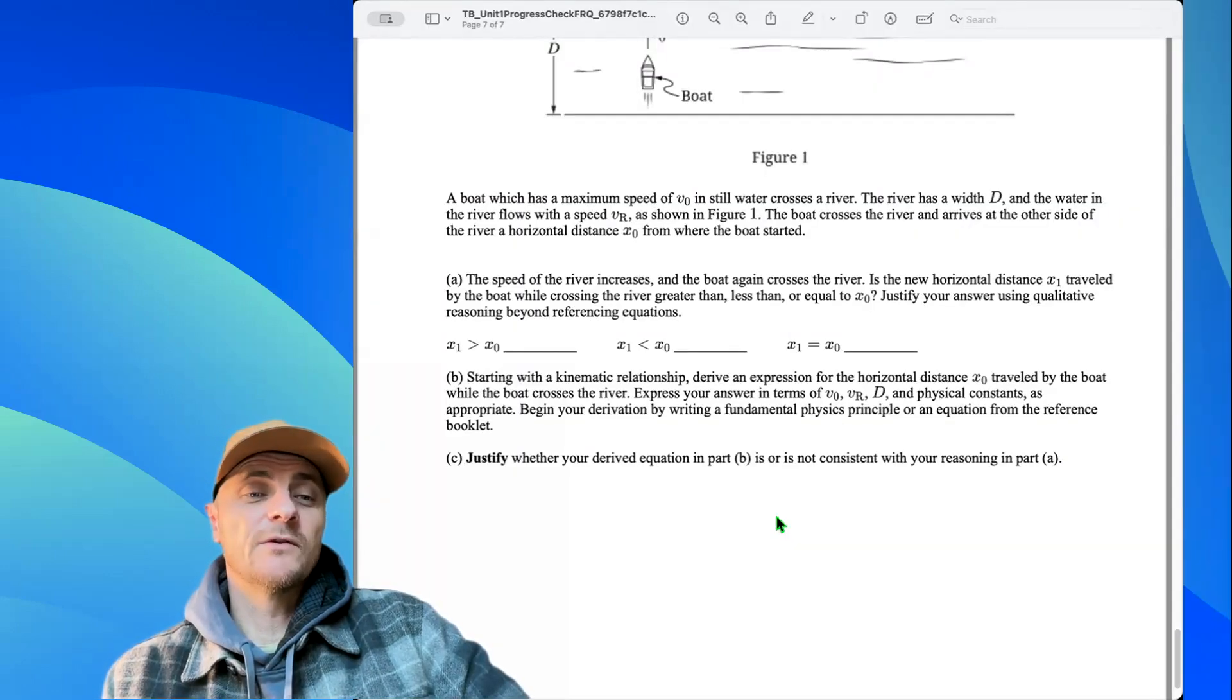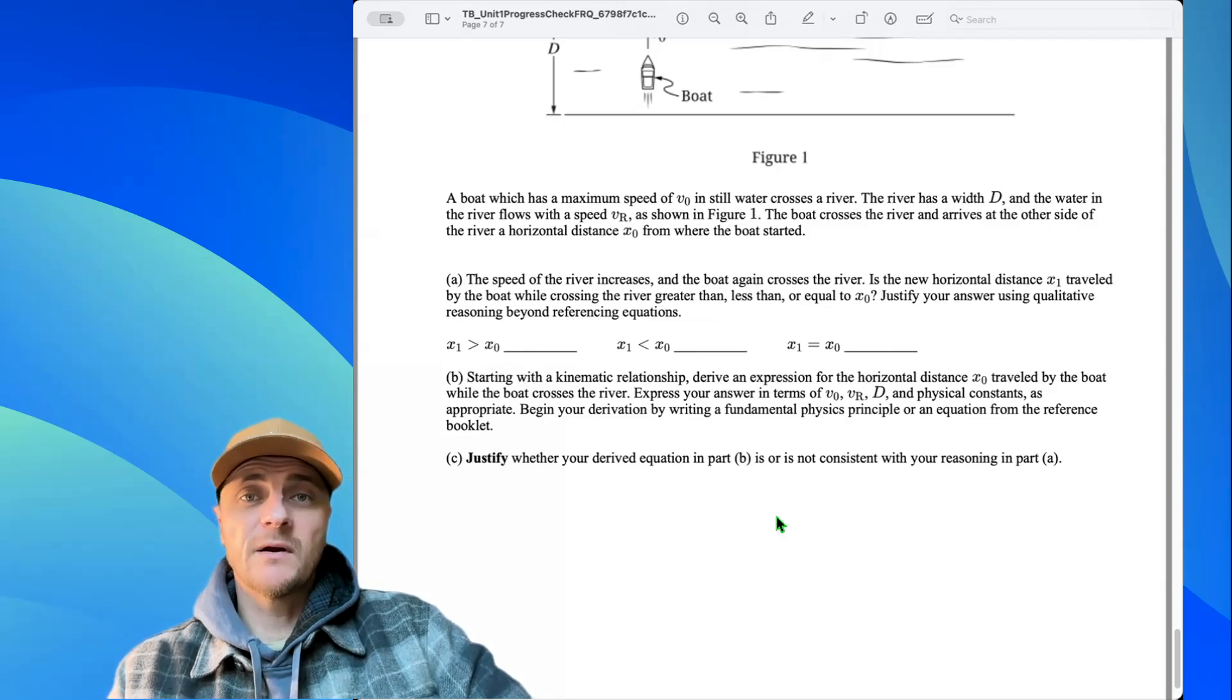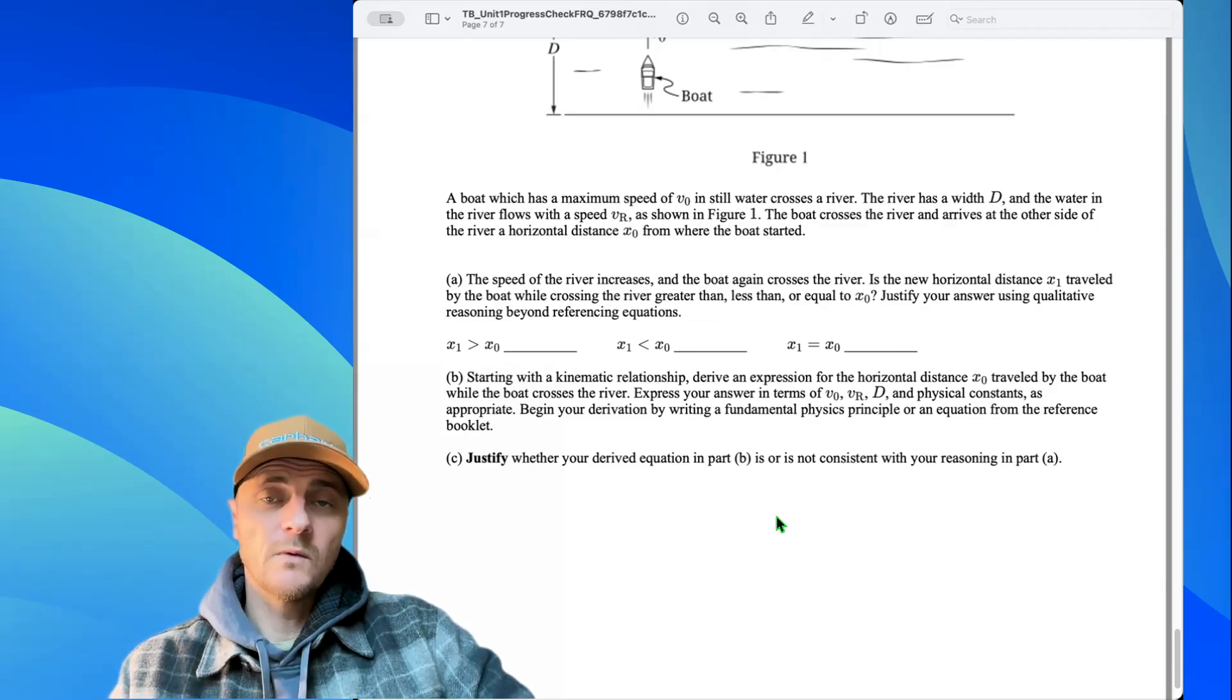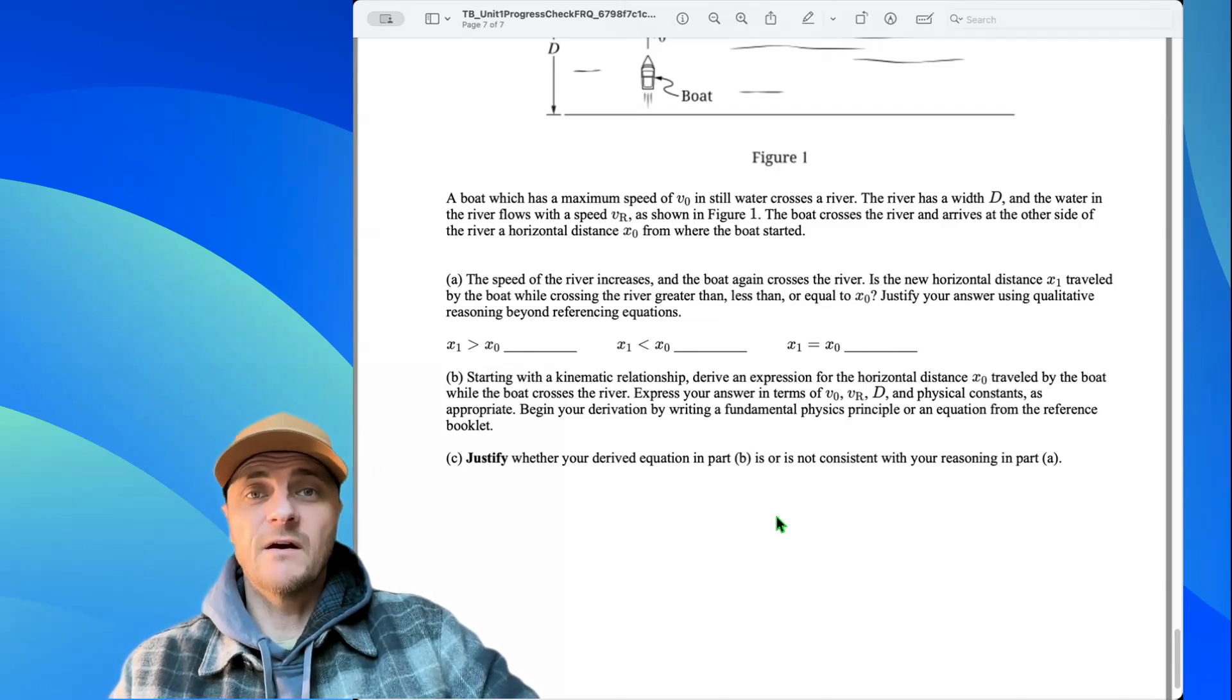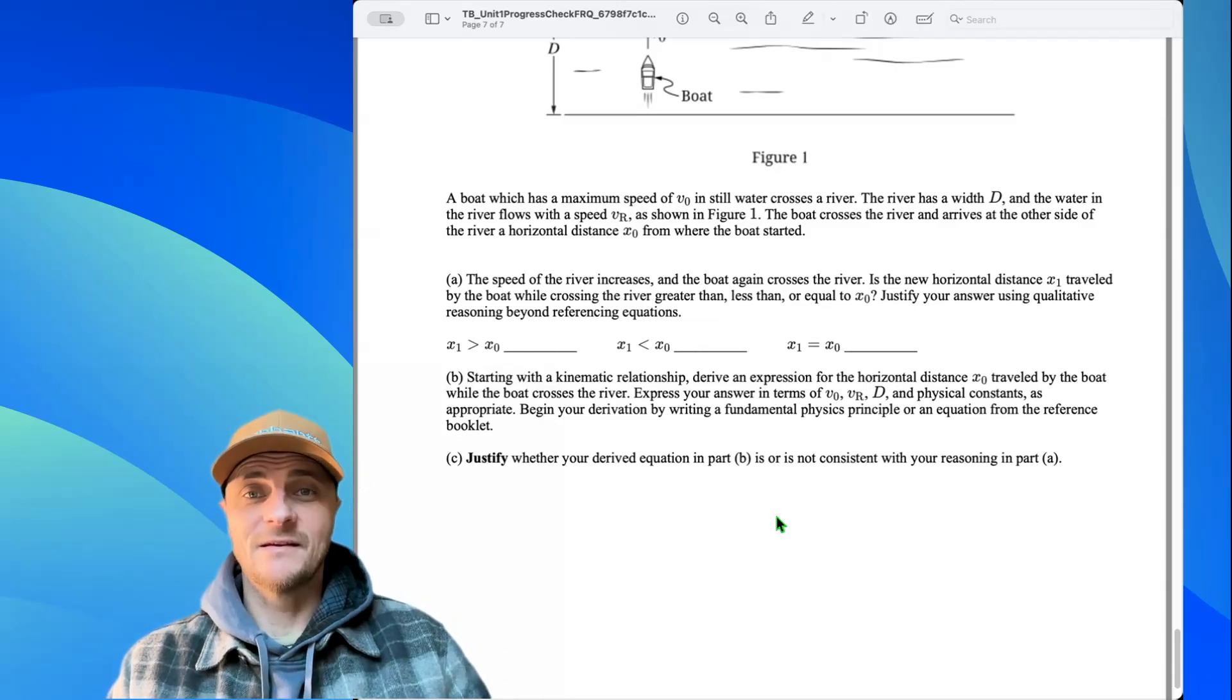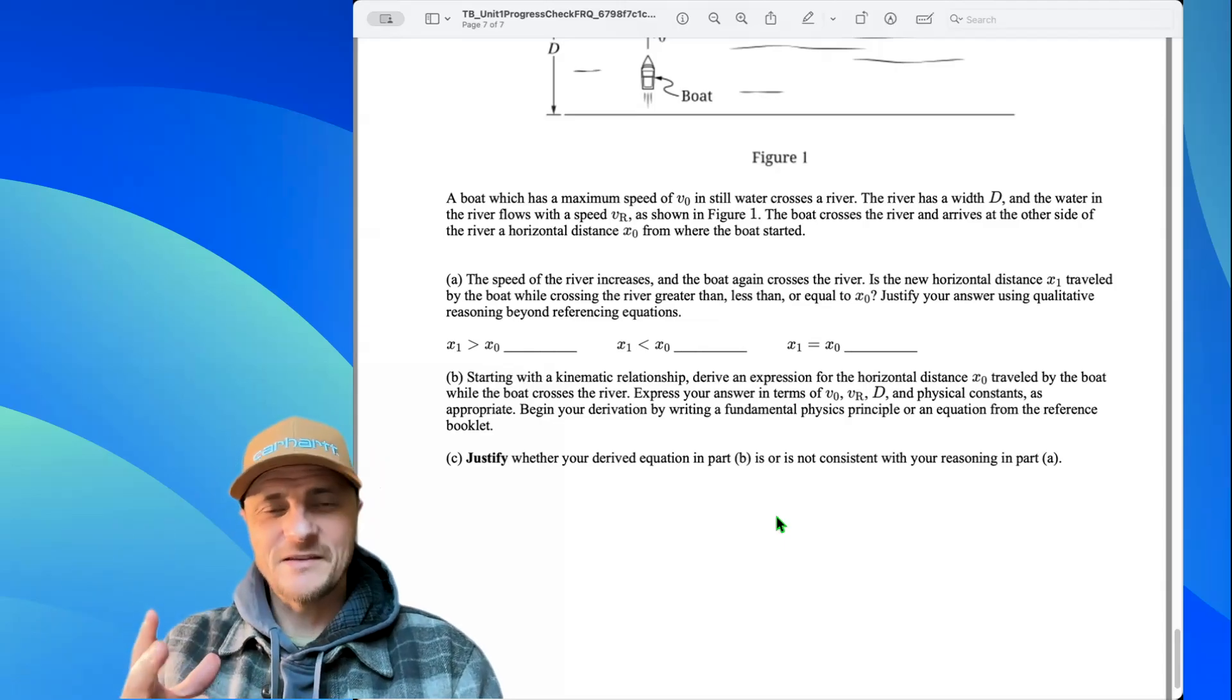Part C. Justify whether your derived equation in part b is or is not consistent with your reasoning in part a. It is consistent. So I would start off by saying my reasoning in part a stated that as the river velocity increased, a greater distance x-1 would be achieved down the riverbank, period. Looking back at the equation developed, x-naught equals v-r times t. If v-r increases, x-naught would increase, period. And that's it. So notice I didn't reference the equation x-naught equals v-r times d over v-naught. Right? So again, real fast if you want to hear it one more time.